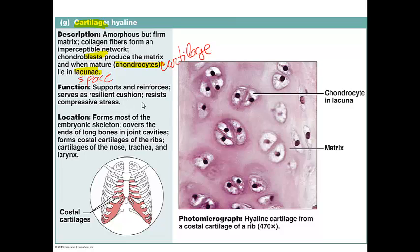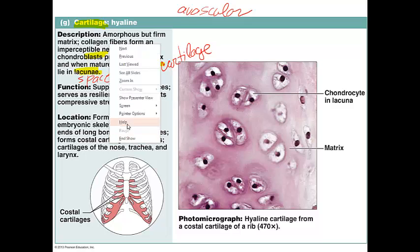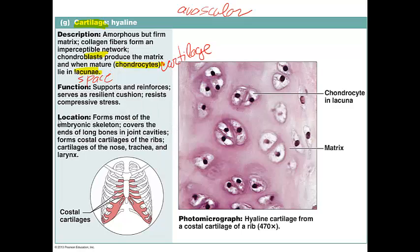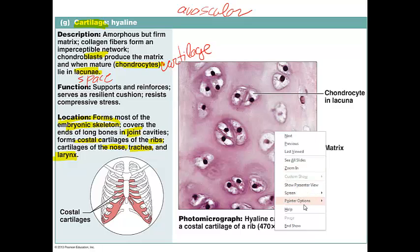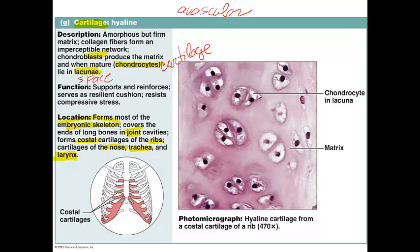Hyaline cartilage is the most common type — very tough but also flexible. Remember that cartilage is one example of an avascular type of connective tissue. The entire embryonic skeleton begins as hyaline cartilage. It remains in some places in the skeleton: in joints, in the ribs as costal cartilage, in the cartilage of the nose, tracheal rings, and part of the larynx. On this slide, you can see the chondrocyte located within the lacuna.